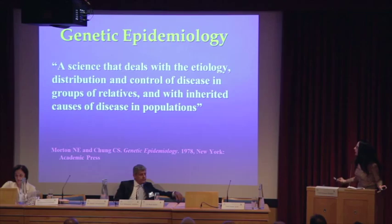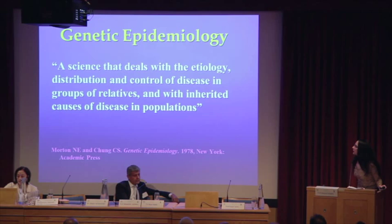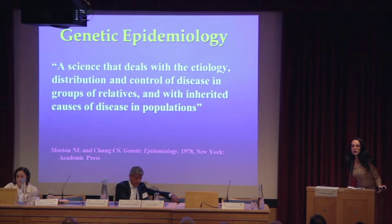My academic degrees are in medical genetics and my postdoctoral training is in genetic epidemiology. I thought I'd start by giving you the classic definition for genetic epidemiology — it's a fairly new discipline, first defined in 1978 as a science that deals with the etiology, distribution, and control of disease in groups of relatives and with inherited causes of disease in populations. The definition has evolved over the years, but inherited causes of disease and hereditary conditions are key concepts in genetic epidemiology and medical genetics.